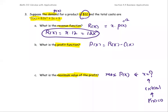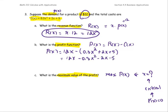For Part B, the profit function is revenue minus cost. So P(x) equals 12x minus (0.3x² + 2x + 5). Make sure you put parentheses around the cost — without them you'll get the wrong equation. Open up the parentheses, apply the negative sign to each term, and simplify. The like terms are 12x and negative 2x, giving 10x. So P(x) = 10x − 0.3x² − 5.